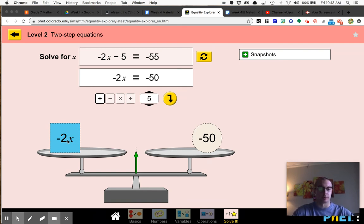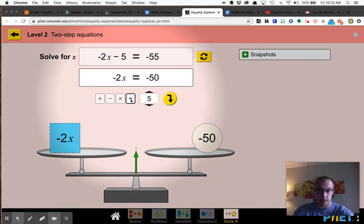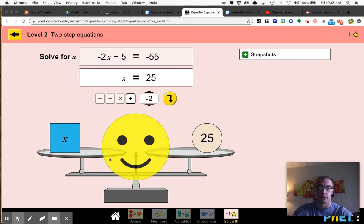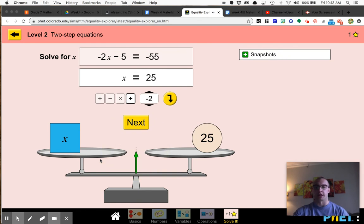So then I see multiplying negative two times x. So the opposite of multiplying by negative two would be to divide. So I'm going to hit the divide. And then I'm going to try to make this negative two. And then it shows me that I got that equation correct. X equals 25.